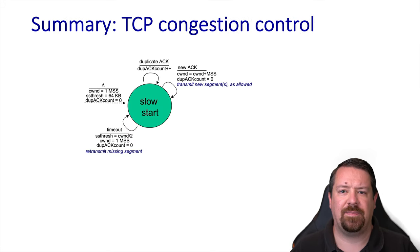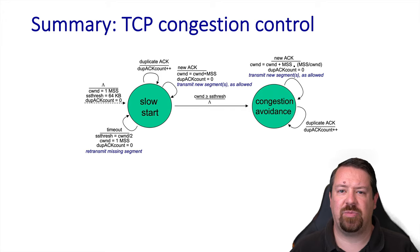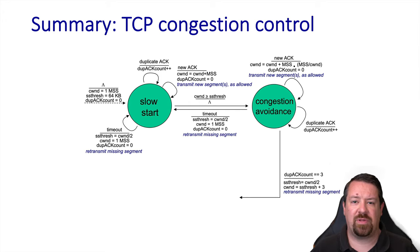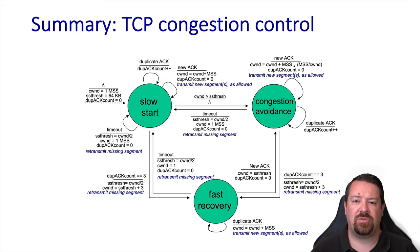We can also look at this as a finite state machine. In slow start, every new ACK increases the congestion window by one MSS; a timeout causes retransmission, sets the SS threshold to congestion window over two, and resets the congestion window to one MSS. When the congestion window exceeds the SS threshold, we move to congestion avoidance, where the window increases more slowly and duplicate ACKs are tracked. A timeout moves back to slow start, but if the duplicate ACK count exceeds three, we retransmit the missing segment and enter fast recovery. During fast recovery, the window continues to increase as new segments arrive, and once new ACKs replace duplicates we return to congestion avoidance. Slow start can also move to fast recovery on triple duplicate ACKs; a timeout during fast recovery transitions back to slow start. Throughout, a timeout is considered a much more severe congestion signal than a triple duplicate ACK.